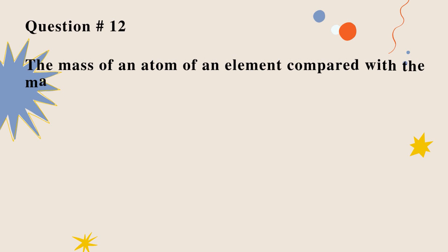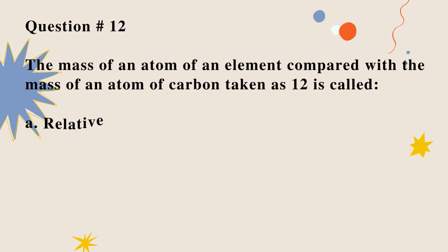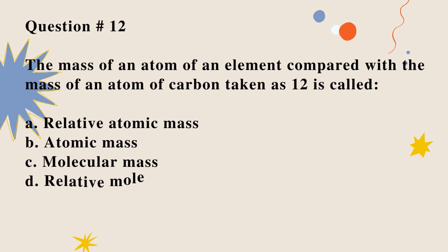Question number 12. The mass of an atom of an element compared with the mass of an atom of carbon taken as 12 is called: A. Relative atomic mass. B. Atomic mass. C. Molecular mass. D. Relative molecular mass. Correct option is A.